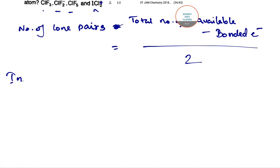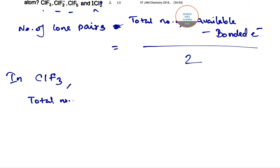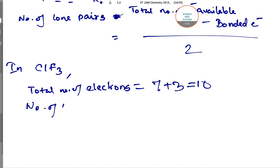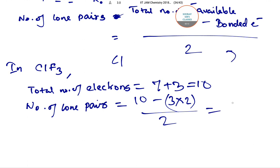For CLF3, the total number of electrons available is 7 plus 3, which equals 10. The number of lone pairs equals 10 minus the bonded electrons. In CLF3 the number of bonds is 3, so 3 into 2 gives the bonded electrons. Dividing by 2: that gives 4 divided by 2, which equals 2 lone pairs.